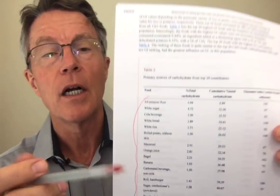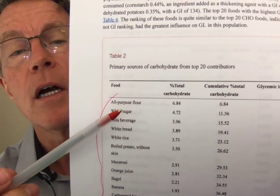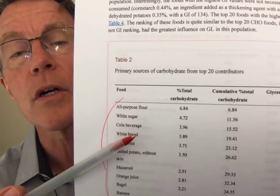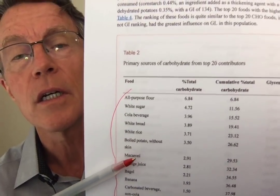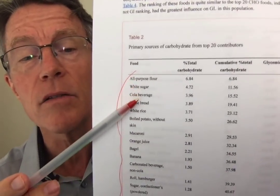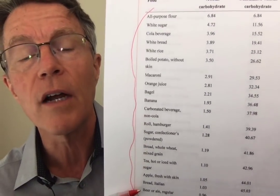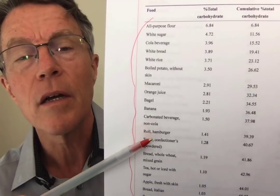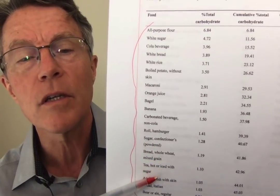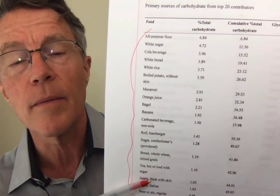Let's look at the top carbohydrate foods these people were eating: all-purpose flour, white sugar, cola beverages, white bread, white rice, boiled potatoes. These aren't just top foods — these are the top carbohydrates. I don't see broccoli, cauliflower, green beans, or any ancient grains here. All I see is high glycemic index foods. No wonder we've got a problem.